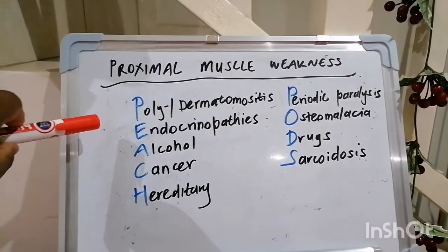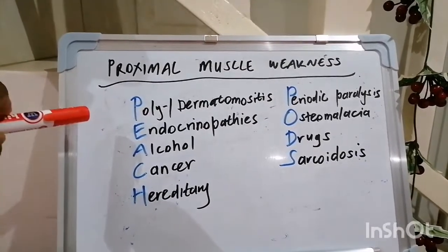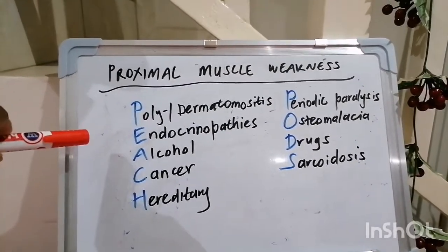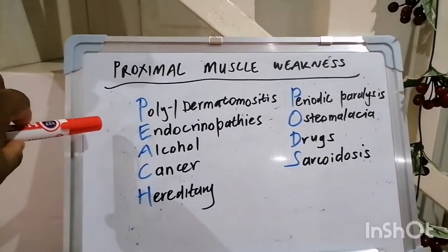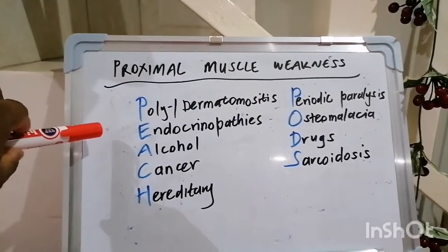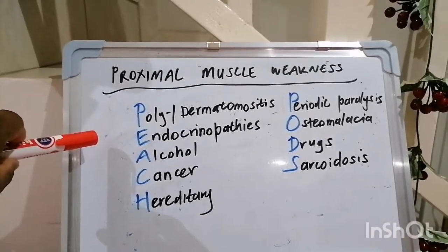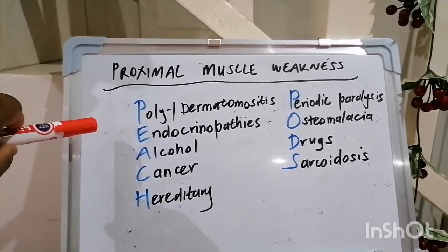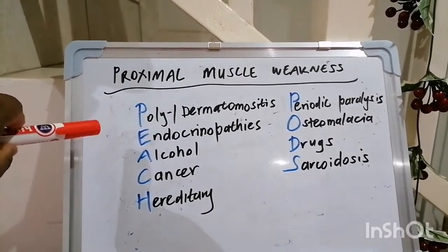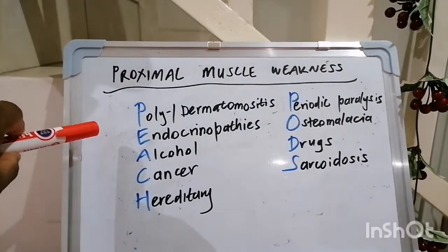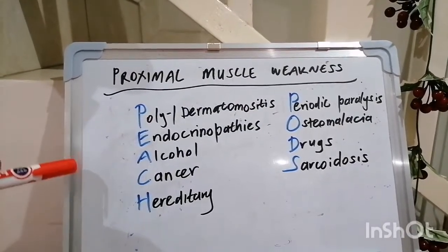Endocrinopathies can also cause proximal muscle weakness — the likes of acromegaly, both hypo- and hyperthyroidism. Don't forget about Cushing's syndrome. It's good to test for proximal muscle weakness in these entities as well.